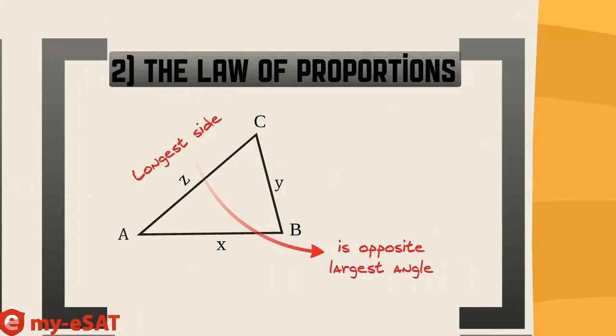How about this one? Triangles also obey the law of proportions. This law says that the longest side of a triangle is opposite the largest angle in the triangle. So, in our diagram, side z is the longest side because it is opposite angle b, which has to be the largest angle. This has to always be true. And the opposite has to always be true. The shortest side is opposite the smallest angle. So that means side y, which is the smaller side, is opposite to angle a, which must be the smallest angle.